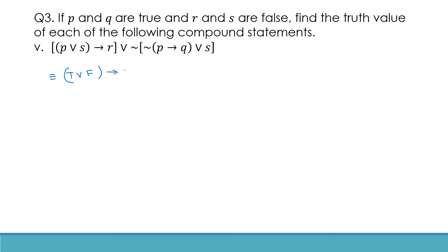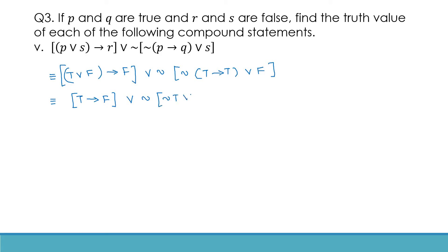Writing down the truth values — this is a continuation of the same question. We get: true implies true or false. First, do the brackets: true or false is true, so true implies false. Then not of true implies true, which is true. True implies false is false; not false or false — false or false is false, so not of false, which is true. Therefore this is a true statement.